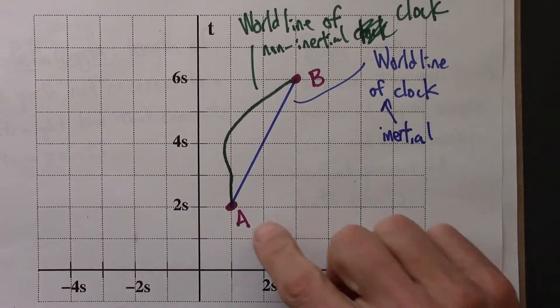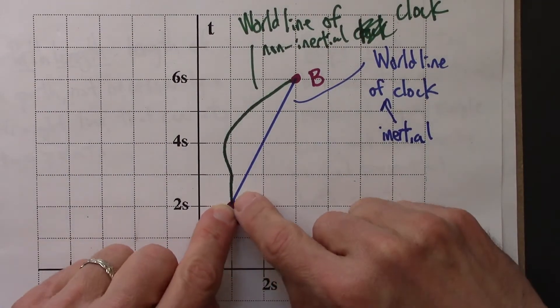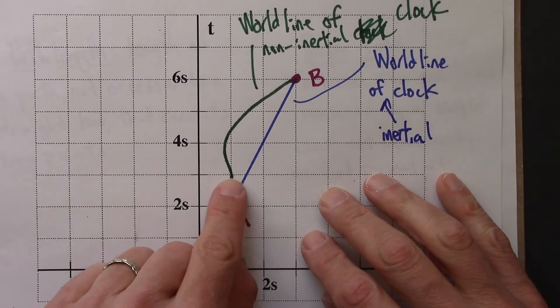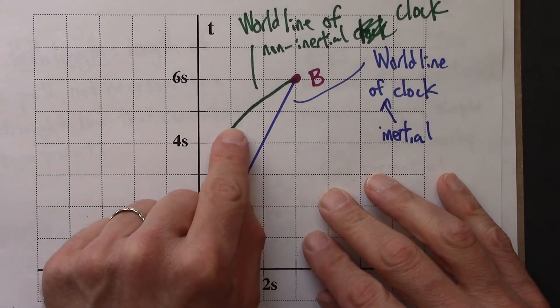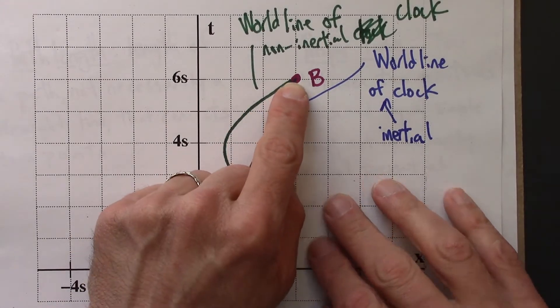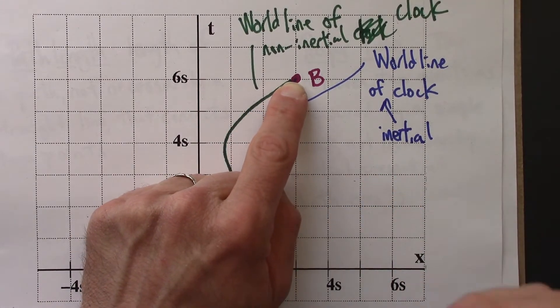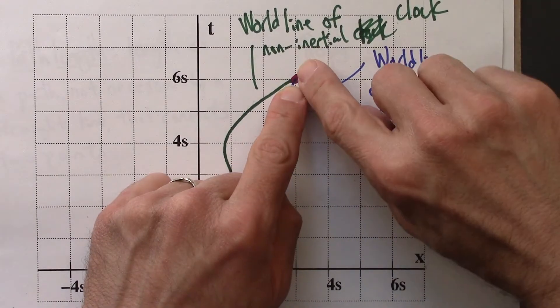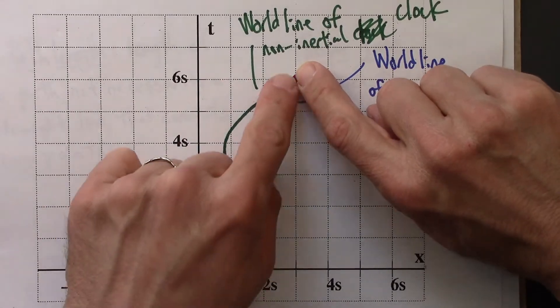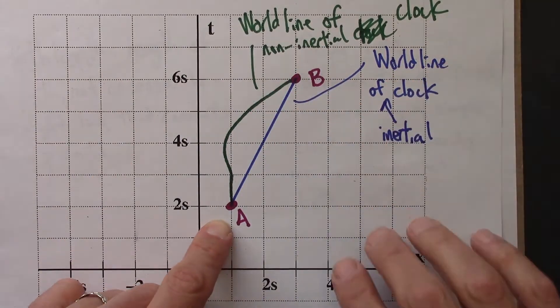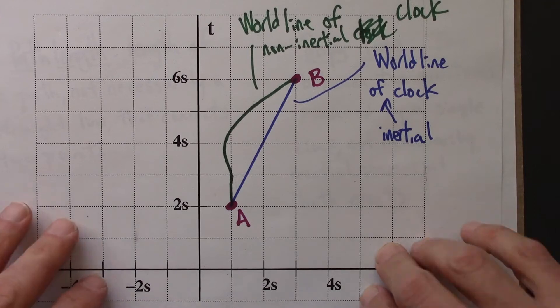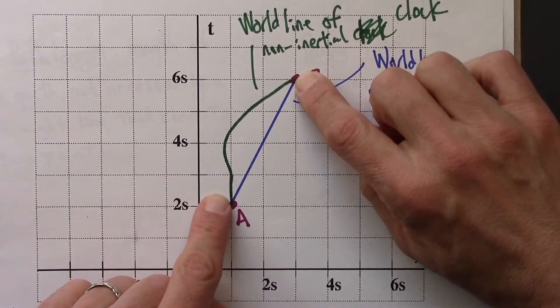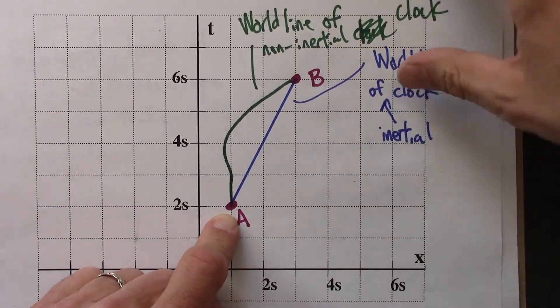So we could ask, what time does this green clock say when it's at event A, and then it stays at rest, goes to the left a little bit, goes over here fast, and then it is present, physically present, at event B. And we could ask, what time does the clock read at event B? And the difference in those clock readings, we would call that the proper time associated with this path for these two events in space-time.